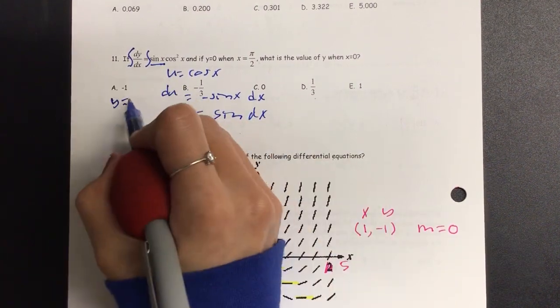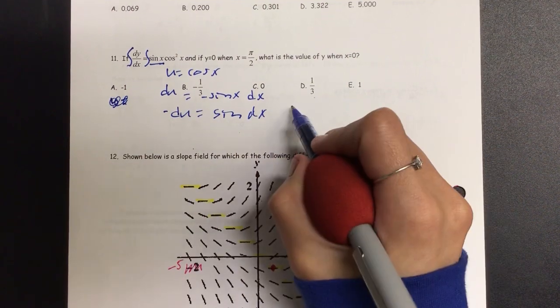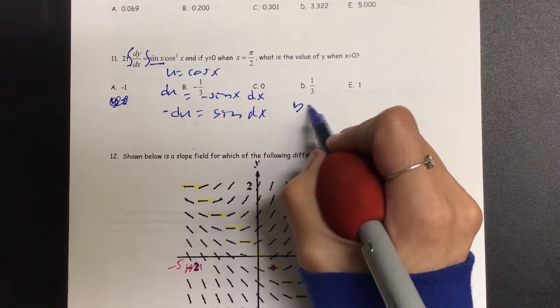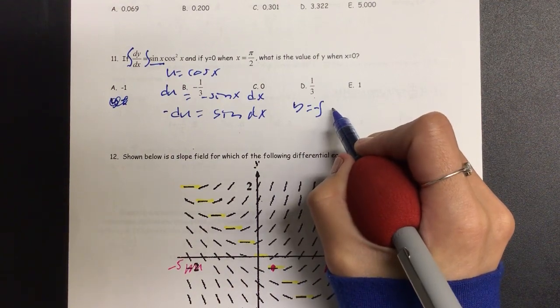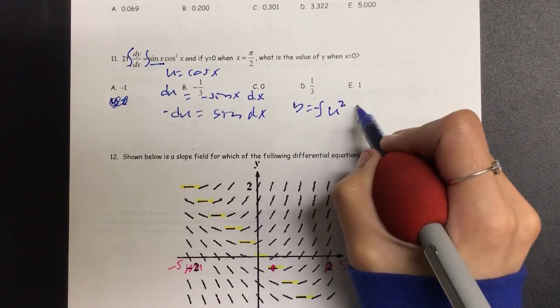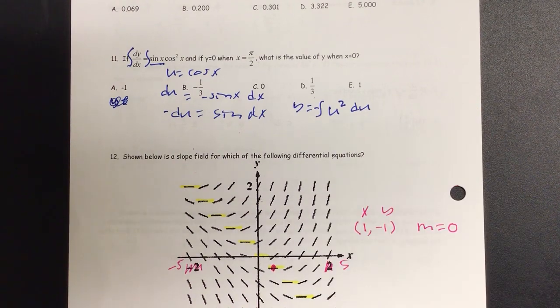So my direct substitution is going to be, let me rewrite it over here, y is equal to the integral of, kick out the negative, u is substituted instead of cosine, u squared du, and then let's add one and divide it by that.